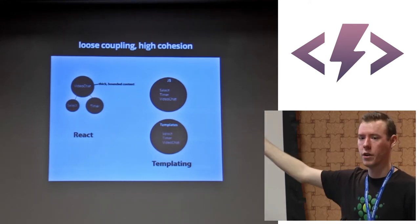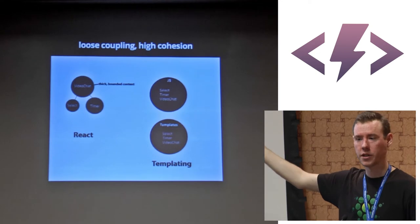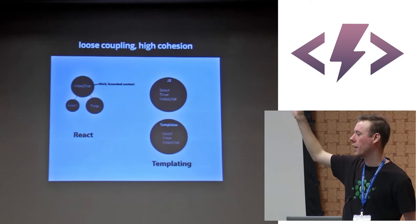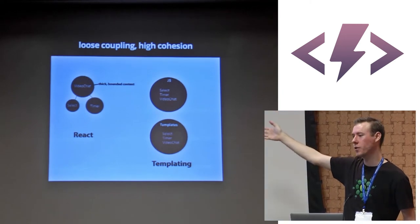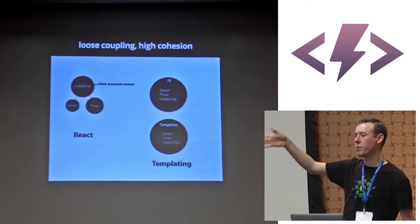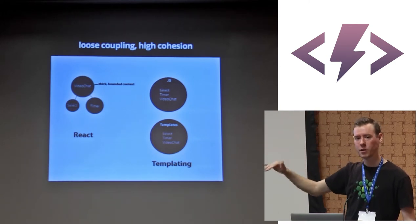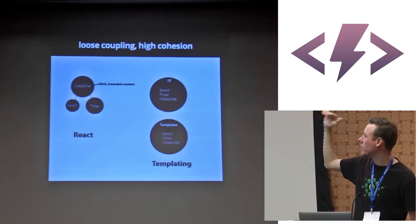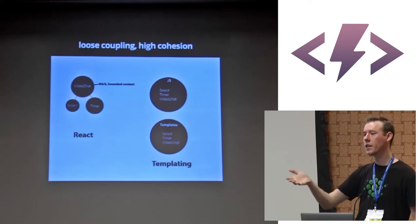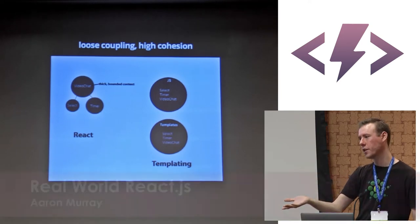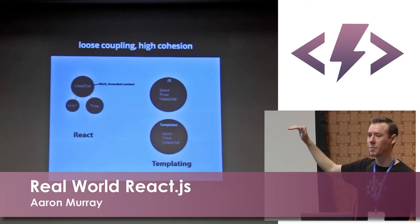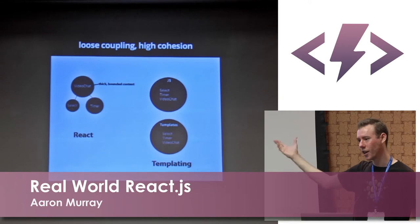The MVC organizational layout breaks cohesion to some extent because you're organizing by types of files versus content. You've got your views folder with Backbone views, your templates folder, separated out by model, view, controller. You're organizing by what type of file it is versus what content it contains.